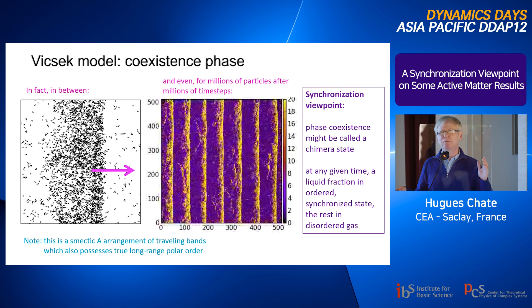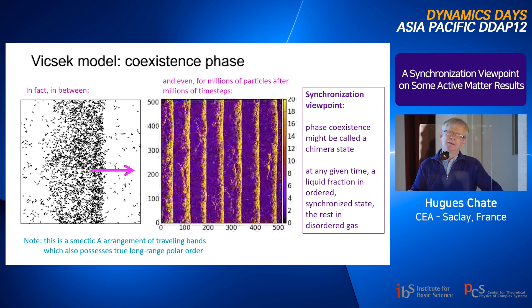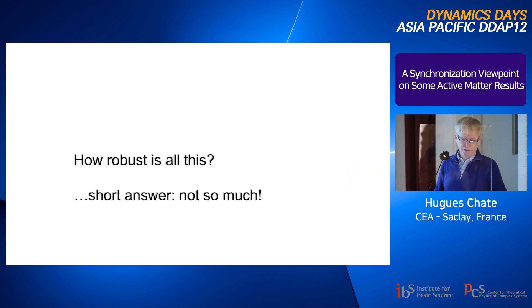From a synchronization viewpoint, you have a macroscopic fraction of particles — or oscillators — that are synchronized, coexisting with a macroscopic fraction of desynchronized particles in the gas. If you forget about space and plot the phase distribution, you see something some people might call a chimera: a fraction of aligned, synchronized particles coexisting with a fraction of desynchronized particles. This happens very generically in the presence of noise with identical particles.